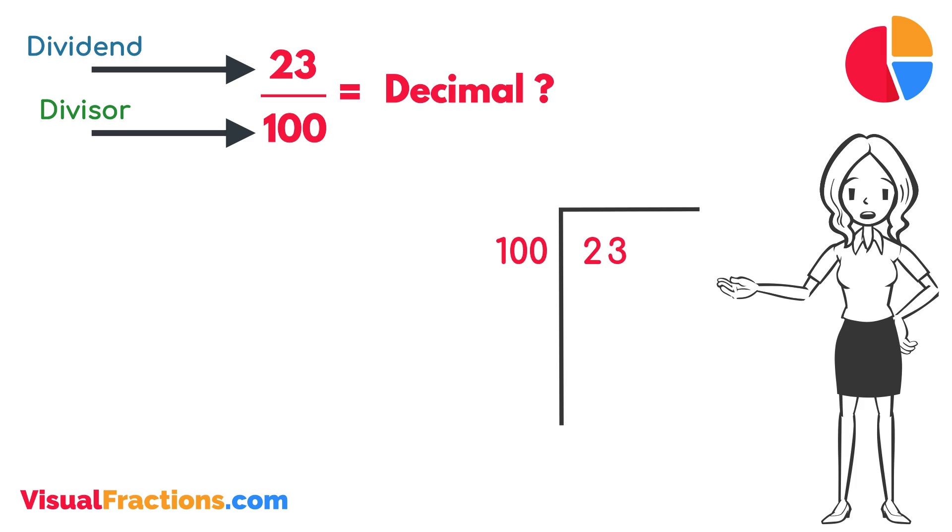Since 100 doesn't fit into 23, we add a decimal point in our answer and append two zeros to 23, making it 2,300.